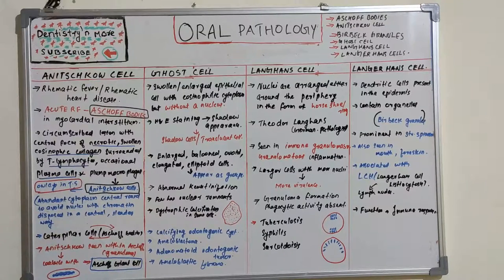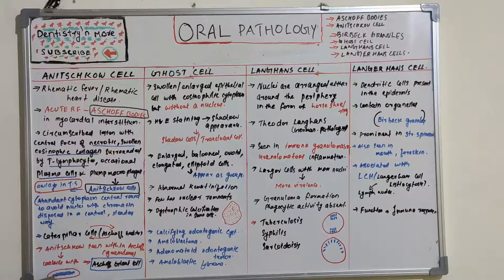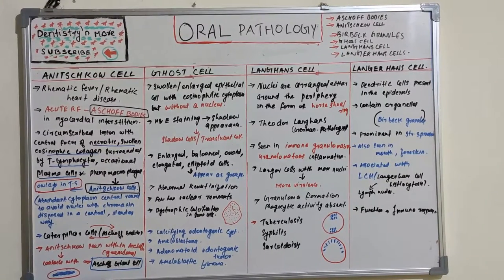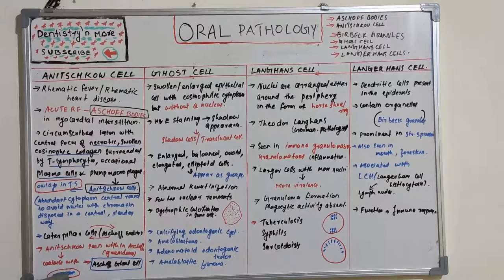In detail, the Anishkov cell has abundant cytoplasm with central round to ovoid nuclei, with chromatin disposed in a central and slender way. That is why it is also known as a caterpillar cell, because of the caterpillar shape of the central chromatin.